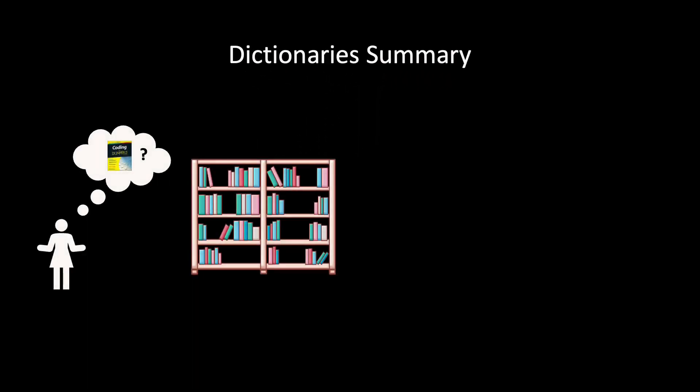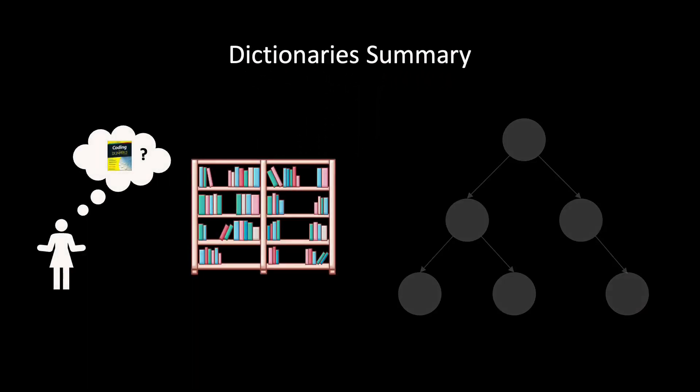In conclusion, in this video we have seen what dictionaries are and how we can implement fundamental operations in a dictionary using a binary tree. We have discussed the difference between static and dynamic dictionaries, and we have discussed the time complexity of binary search trees. Thanks for watching this video.